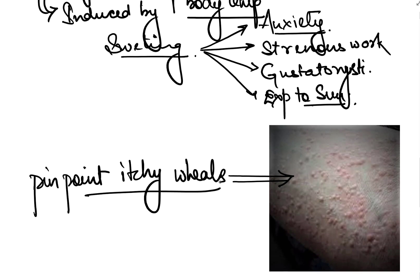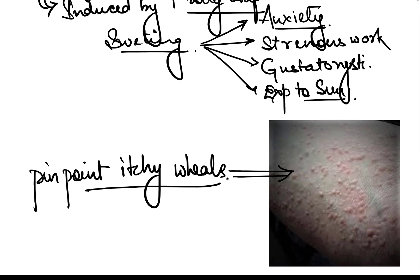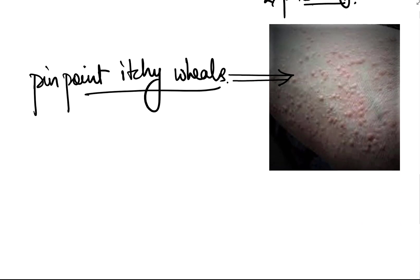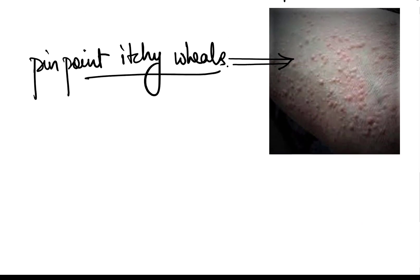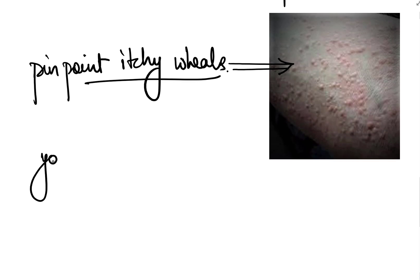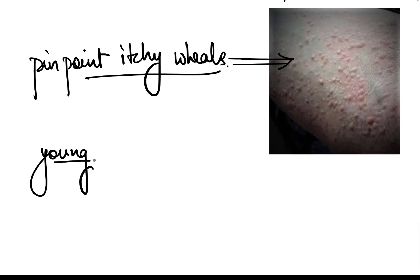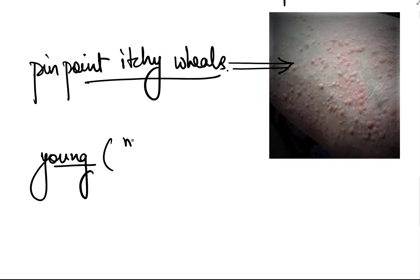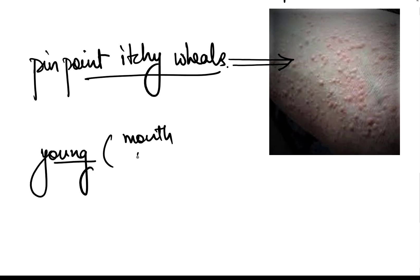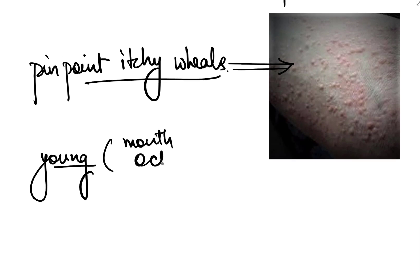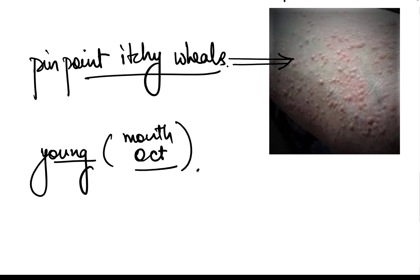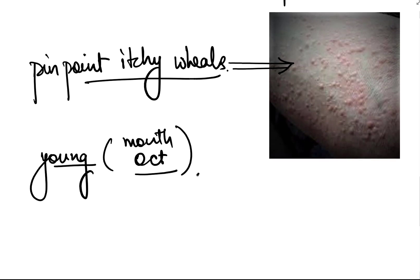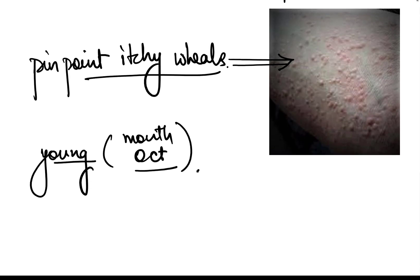These pinpoint itchy wheals are seen and this type of urticaria is commonly seen in young individuals, especially in the month of October where winter starts and there is a change in temperature, which leads to cholinergic urticaria.